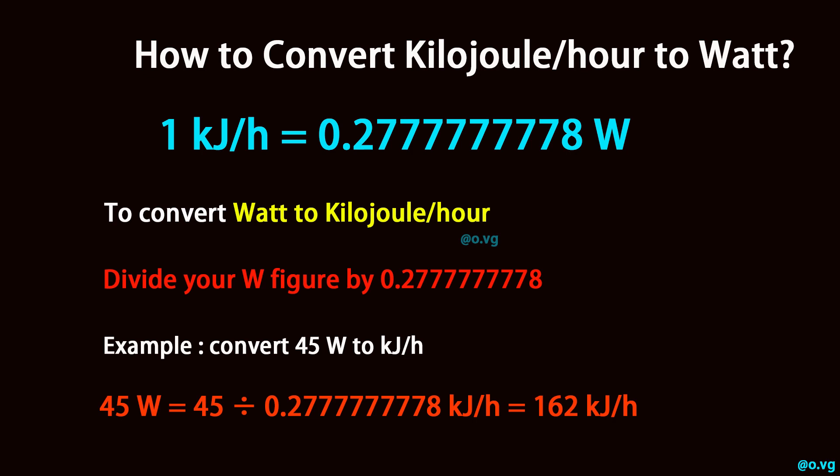Example: convert 45 watt to kilojoule per hour. 45 watt equals 45 divided by 0.2777777778 kilojoule per hour, which equals 162 kilojoule per hour.